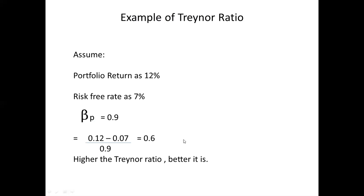Assume there are two portfolios — one with a Treynor Ratio of 0.6 and another with a Treynor Ratio of 0.8. If you have a client, where would you invest their money — in the 0.6 or the 0.8 Treynor Ratio portfolio? Obviously, you would go with 0.8. This was a simple example of the Treynor Ratio.